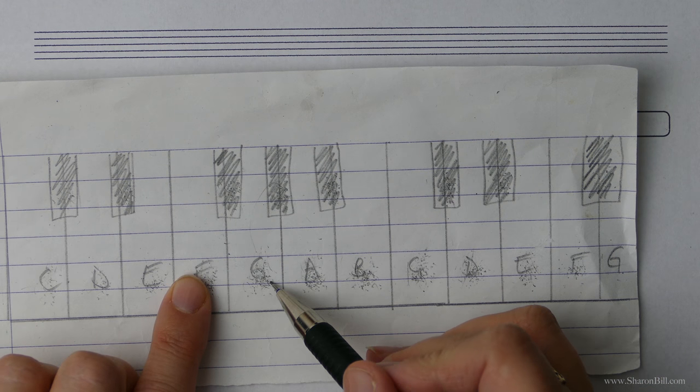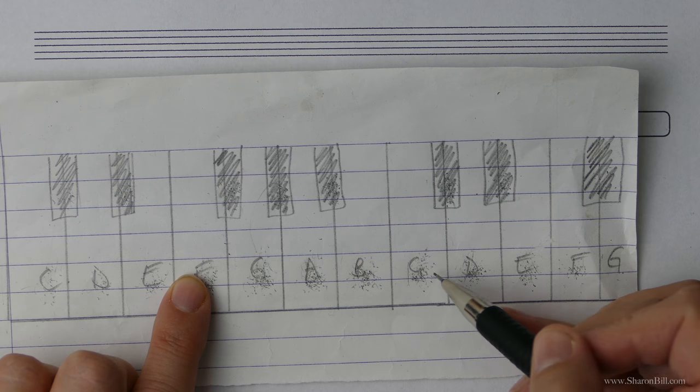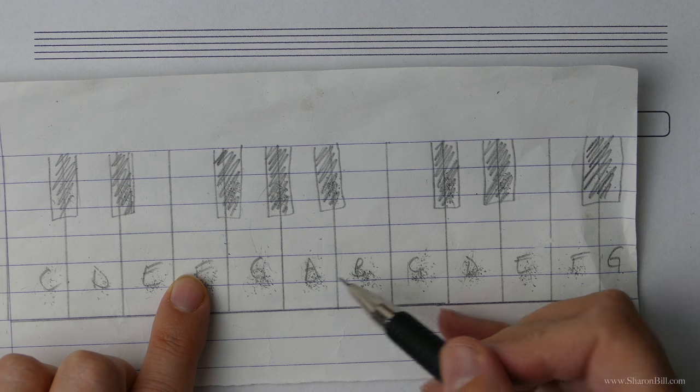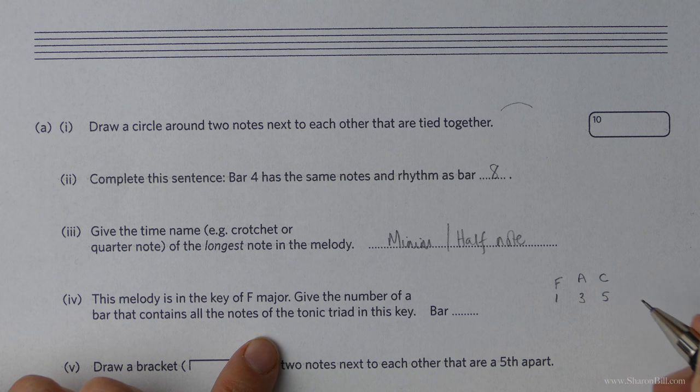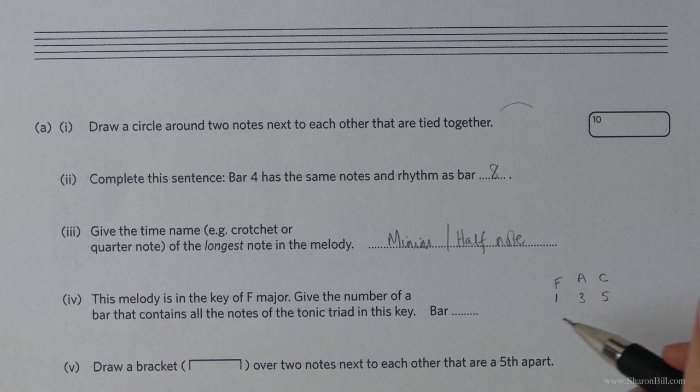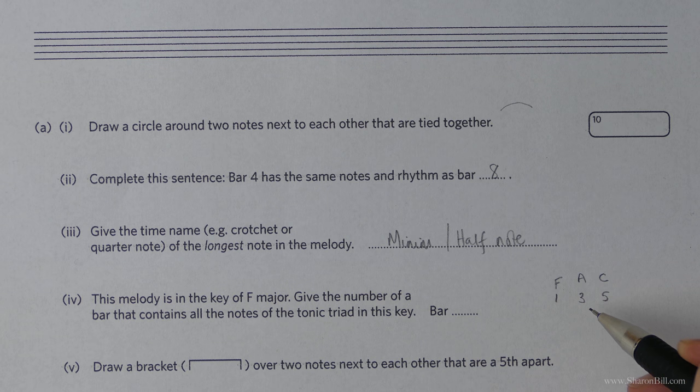So if we're in F major F is the first and then the third. If you're not happy just skipping through that in your mind, if you just use a piano keyboard or visualize a piano keyboard you could always just sketch it out. You've got the first, second, third is A, C. So F, A, C. So we're looking F, G, A, B, C. So we need to find a bar that's got those notes in it. All of those notes.